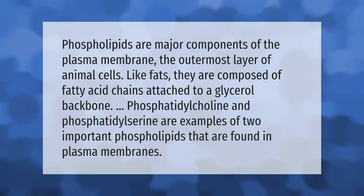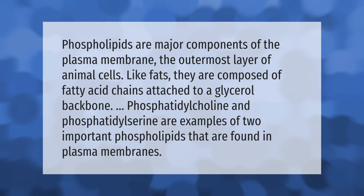Phospholipids are major components of the plasma membrane, the outermost layer of animal cells. Like fats, they are composed of fatty acid chains attached to a glycerol backbone. Phosphatidylcholine and phosphatidylserine are examples of two important phospholipids found in plasma membranes.